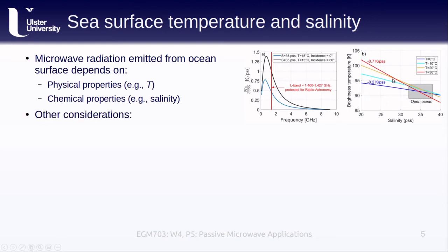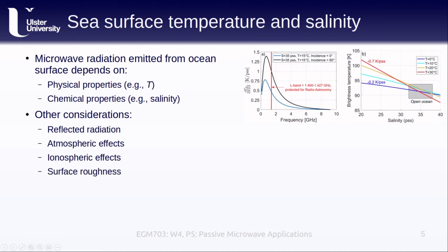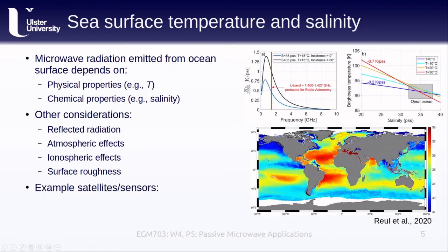We can also see how the relationship between brightness temperature and salinity changes with sea surface temperature. In order to accurately estimate sea surface salinity, we need to know the sea surface temperature. Other things to keep in mind are the component of radiation that has been reflected from other sources, atmospheric effects, ionospheric effects, and surface roughness, all of which change the amount of radiation recorded by the sensor. Two example satellites for estimating sea surface salinity are the Soil Moisture and Ocean Salinity satellite, or SMOS, operated by ESA and launched in 2009, and the Soil Moisture Active Passive mission, which operated in 2015.